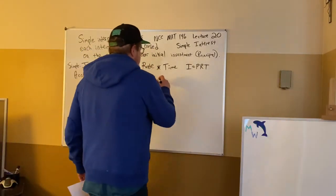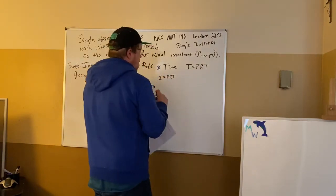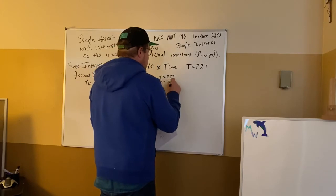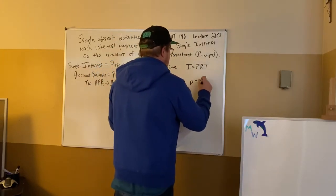Now, if I wanted to take this and do some other things, I could take my I equals PRT and say, you know, I need to isolate P. So let me divide both sides by RT. And I hope you'll be able to do that. And you'll be able to see that P equals I over RT.